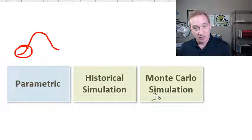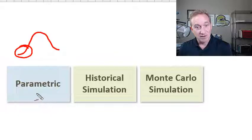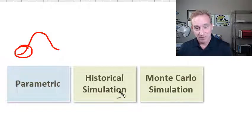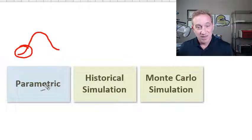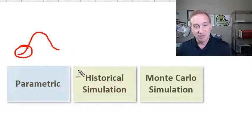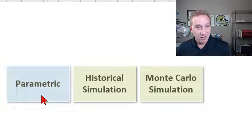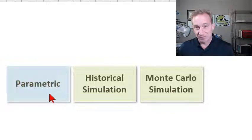We say broadly there are three approaches: parametric, which is also called analytical, historical simulation, and Monte Carlo simulation. You'll notice I've colored these two in green because they're both simulations. On an exam, like the FRM, the parametric approach is popular because it's so simple to use.